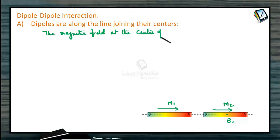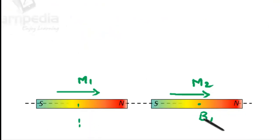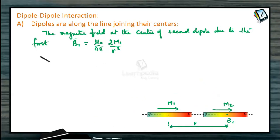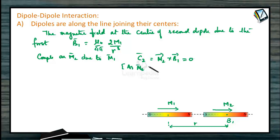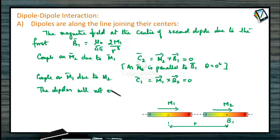The magnetic field at the center of the second dipole due to the first is B1 vector = mu naught by 4 pi times 2M1 divided by R cubed, where R is the distance from the center of the first bar magnet to the center of the second bar magnet. Couple on M2 due to M1: C2 = M2 vector cross B1 vector = 0, because M2 vector is parallel to B1 vector, that is the angle theta = 0. Similarly, C1 = M1 vector cross B2 = 0, since M1 is parallel to B2 and theta = 0. The dipoles will not exert any couple on each other.